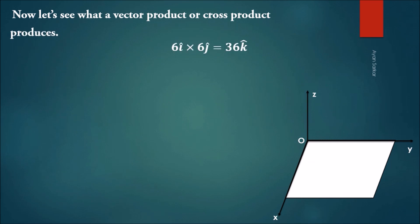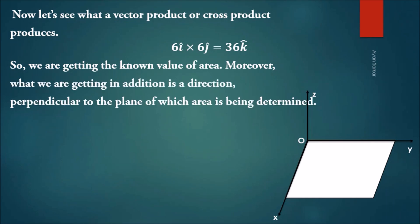Here, 6î × 6ĵ produces 36k̂. We get a magnitude of 36 and a direction perpendicular to the XY plane. This shows that area is indeed a vector quantity. For the XY plane, the direction is along the z-axis, perpendicular to the plane.